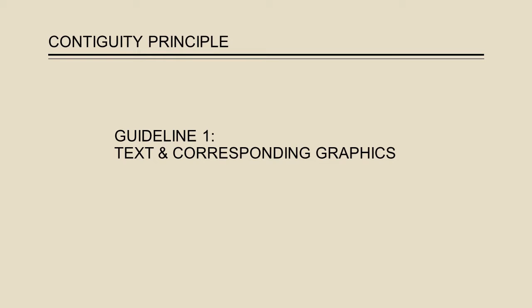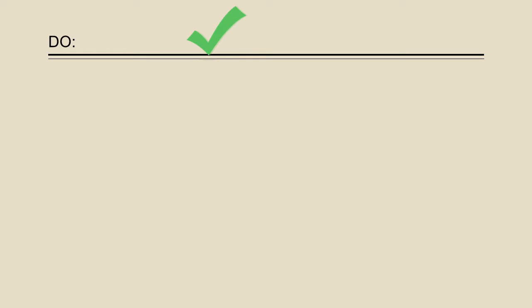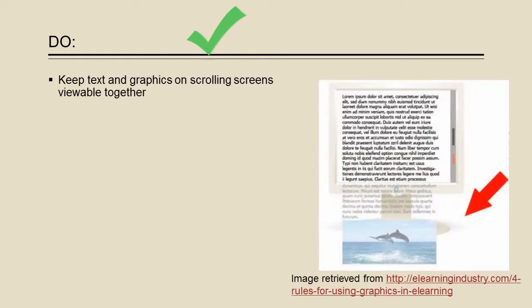The first guideline is that printed words should be near their corresponding images. Some tips for placing printed words near corresponding graphics include: avoid separating text and graphics because of a scrolling screen. If the graphic is listed as a figure that does not fit on the page with its description, then students will be required to scroll back and forth to access both pieces of information at once.